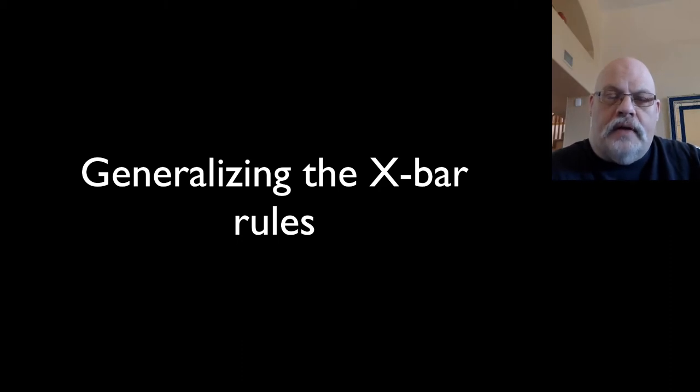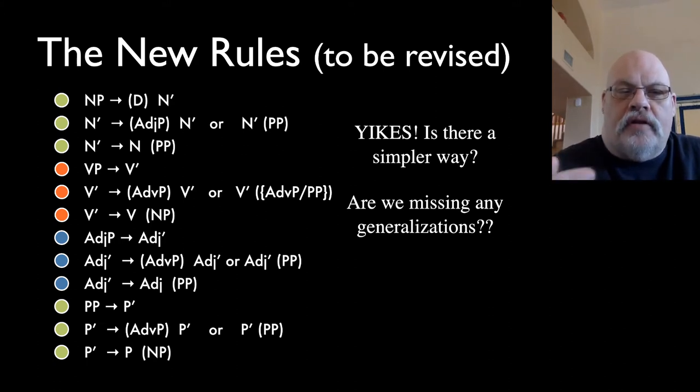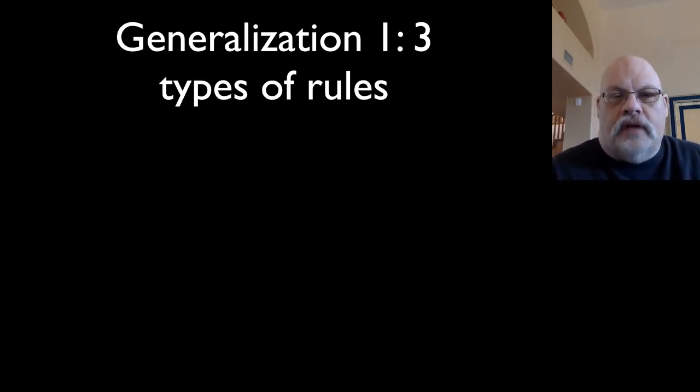So we have evidence that we have quite complicated structure. As a consequence, we've proposed quite a complicated set of rules, and this is even leaving out the TP and CP rules. This is a little daunting and terrifying. We might ask the question: are we missing any generalizations about these rules? Is there a way in which we can capture generalizations that hold across the rules, and thus simplify the rule set?